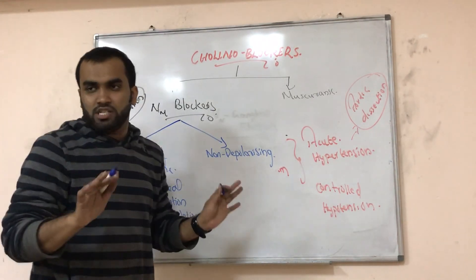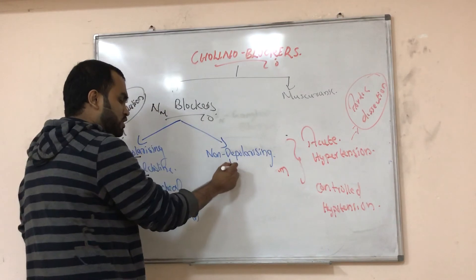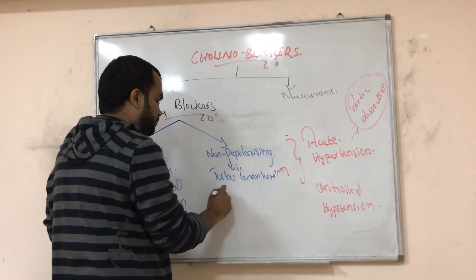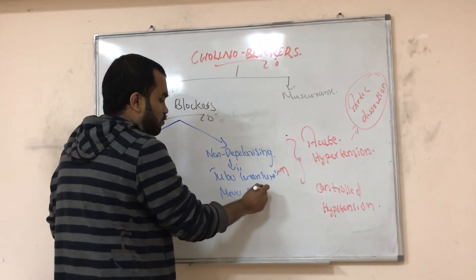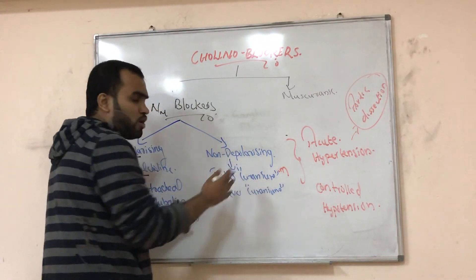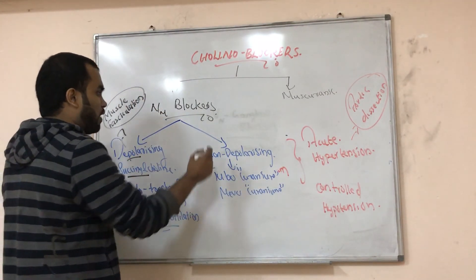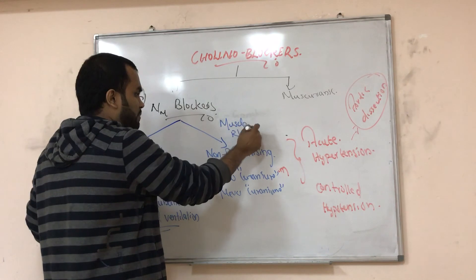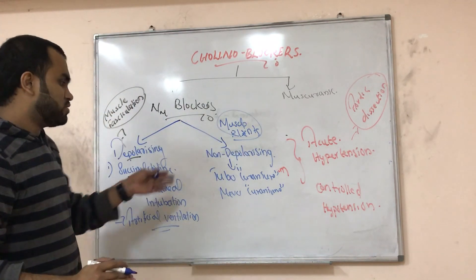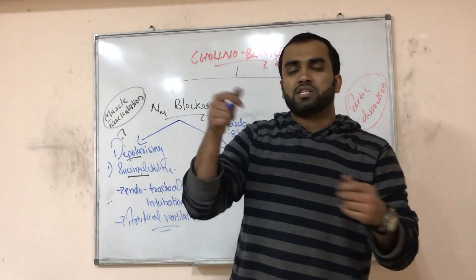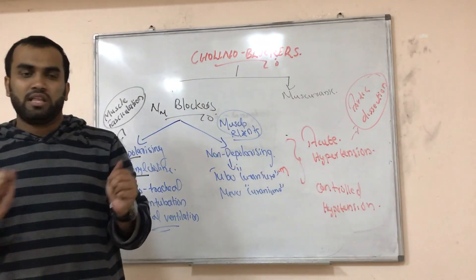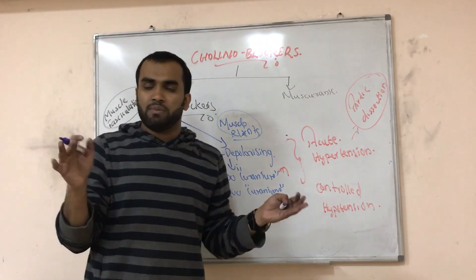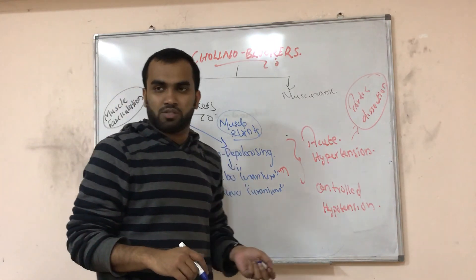Non-depolarizing means they don't use any ions; there is no muscle twitching or fasciculation. Examples include tubocurarine and all drugs with the curare suffix — metocurarine, atracurium — all the curare drugs. They are not depolarizing and will cause muscle relaxation. Both depolarizing and non-depolarizing cause muscle relaxation, but depolarizing uses sodium ions. Historically, curare was used for hunting animals by coating arrows, causing the animals' legs to relax so they couldn't run.